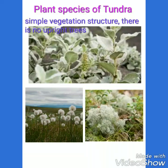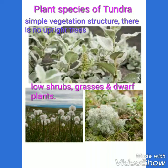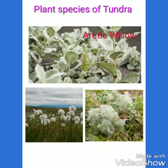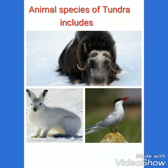The average winter temperature is minus 34 degrees centigrade, and the average summer temperature is between 3 to 12 degrees centigrade. The tundra has a simple vegetation structure with no upright trees. Some plant species include arctic willow, cotton grass, caribou moss, and lichens.